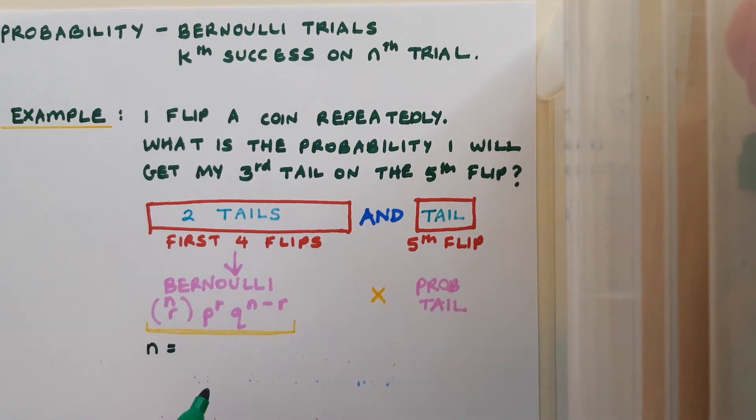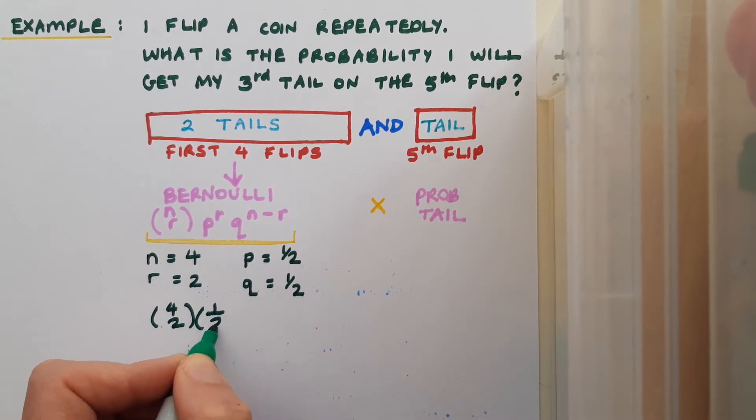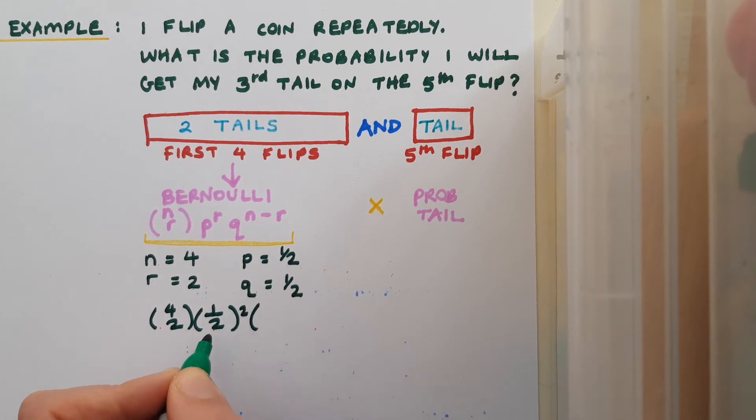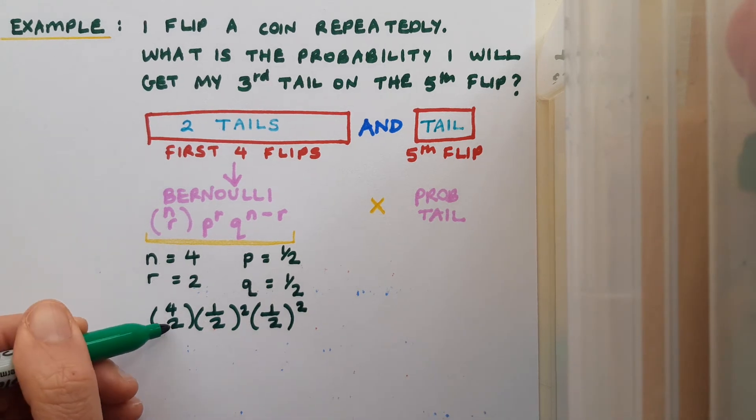So let's deal with the Bernoulli part of it first. I'm going to have four flips. I want to get tails twice, and I'm defining my success as tails, which is a probability of a half, and failure as heads, which also has a probability of a half. And now filling into that formula, I'm going to have four choose two, a half to the power of two, that's success twice, tails twice, and a half to the power of two, that's failure twice, that is heads twice. And again, that two is four minus two.